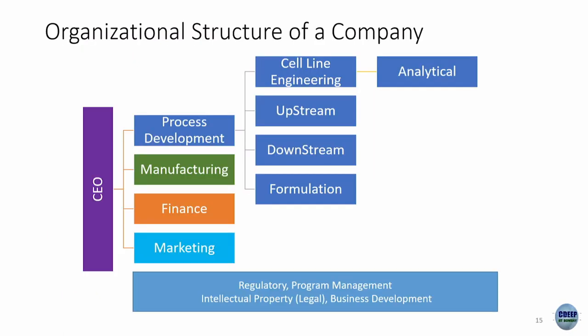In the process development organizational structure within R&D, you have a cell engineering group with molecular biologists and gene editors who make cell lines. These cells are then grown in large quantities in upstream development — fermenters. Downstream development involves purification: chromatography, ion exchange, reverse phase, and other methods. Finally there is formulation, and analytical groups support all of these functions.